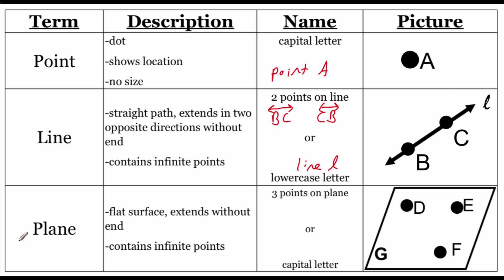Our last structure is a plane. A plane is a flat two-dimensional surface that extends without end in all four directions. It doesn't go up or down — it's just a two-dimensional object, but it doesn't stop at these outer lines. Planes are also made up of an infinite amount of points. When naming a plane, we use three points on the plane, or we use a capital letter.